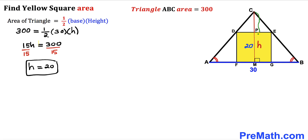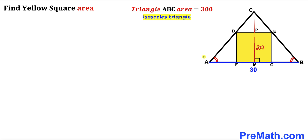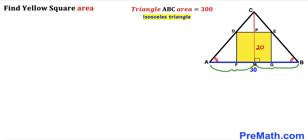The height of triangle ABC is 20 units. Since triangle ABC is isosceles and angle ABC equals angle BAC, and CM is the perpendicular, segment AM equals segment MB. With the total base length of 30, segment AM is 15 and segment MB is 15 as well.